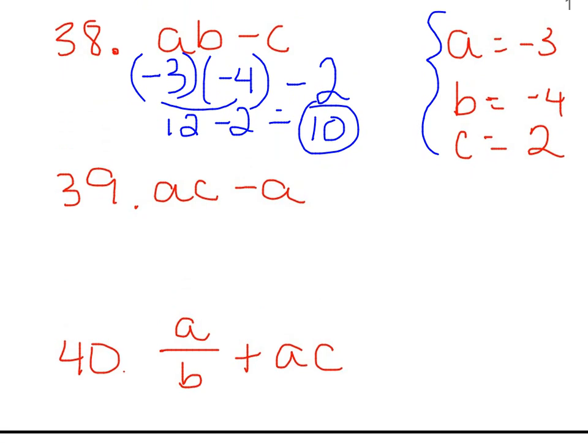And 39, we have A, and that's negative 3 again, this time times C, which is 2, and then we're going to subtract A. So that comes down right there, and then A is negative 3 right there.